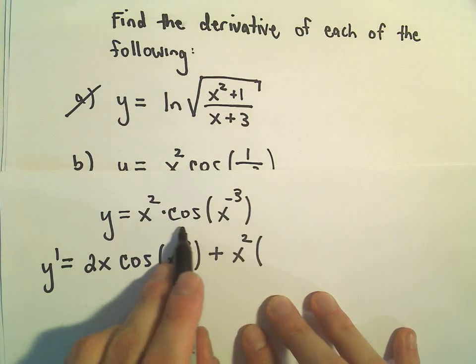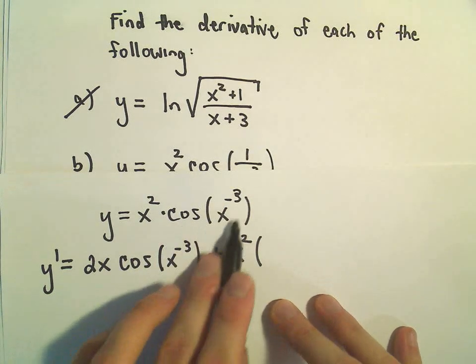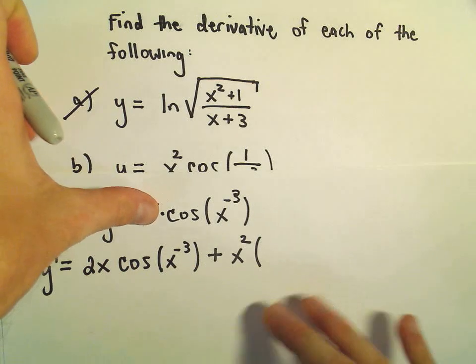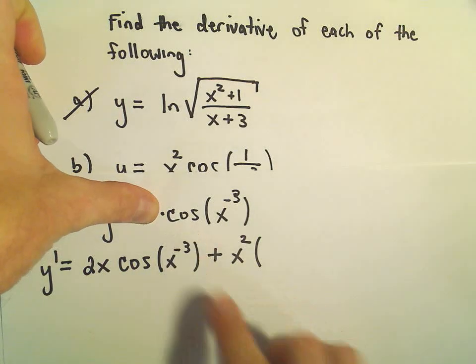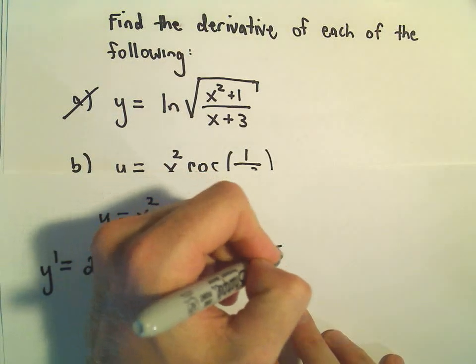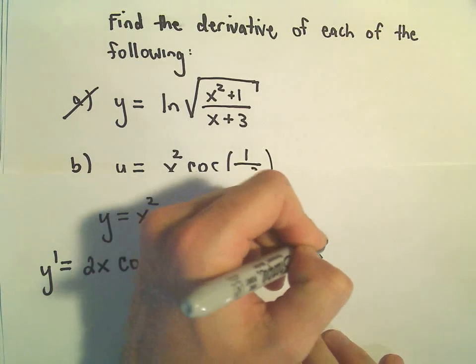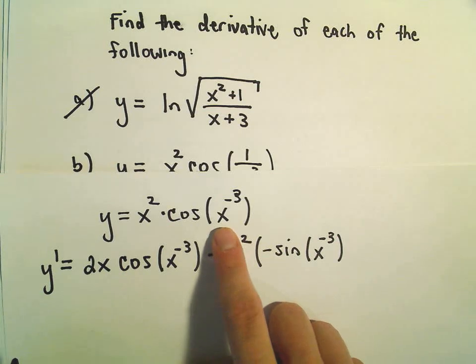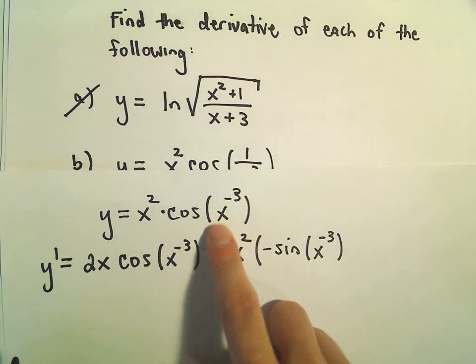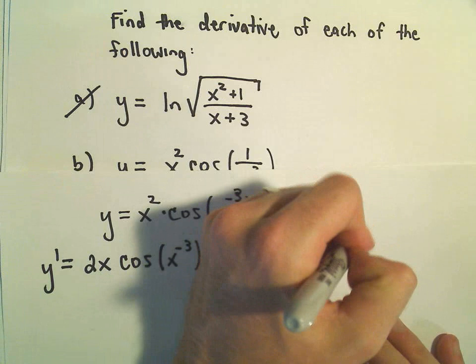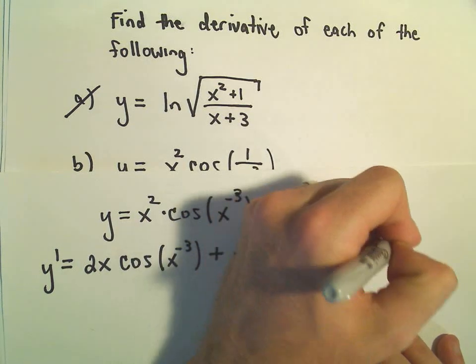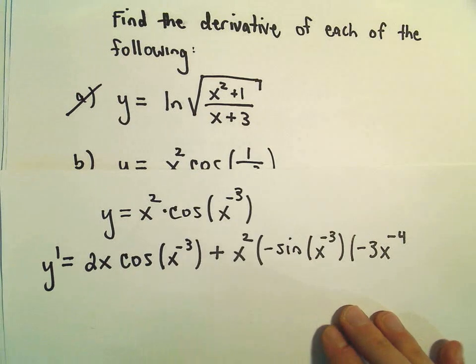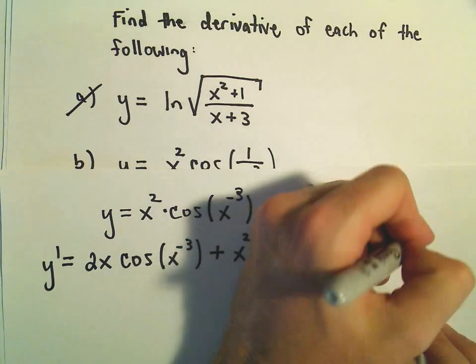The derivative of cosine - so now we have to take the derivative of cosine of x to the negative third. If we start on the outside, the derivative of cosine is negative sine. We'll leave the x to the negative third alone. Now we have to do the chain rule. We'll multiply by the derivative of the inside. The derivative of x to the negative three - the negative three will come out, we'll take one away, so we'll get negative three x to the negative four.